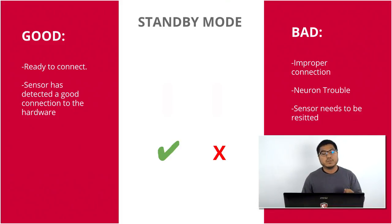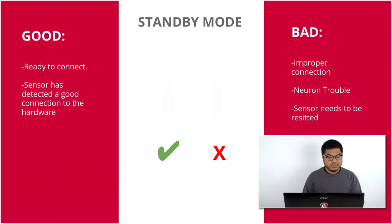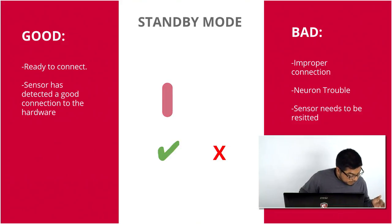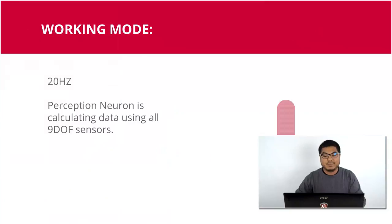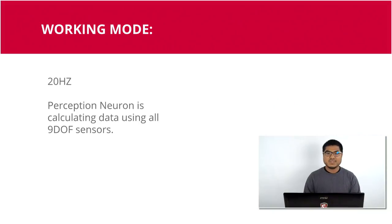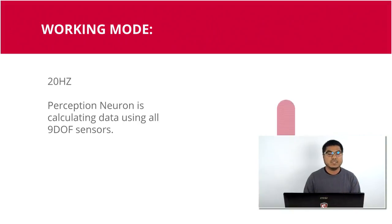If you're connecting your suit and a sensor is not showing up, take a step back, power on your suit, and look at every sensor to see if there's one that's not properly seated or has a firmware issue. In working mode — when the Perception On sensors are connected to Axis Neuron — the sensors are reading data, capturing motion, and ready to record. We call that a 20 hertz flashing light. Perception Neuron is using all nine degrees of freedom: magnetometers, gyroscopes, and accelerometers.